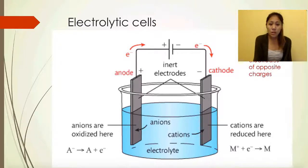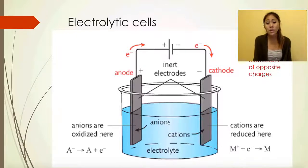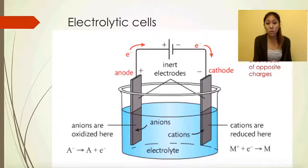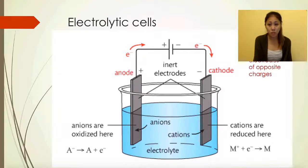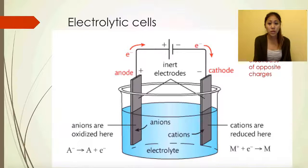At the anode, oxidation still occurs, and at the cathode, reduction still occurs — that doesn't change. Electrons always flow from anode to cathode in both cell types. What does change is the polarity of the electrodes: the anode is negative in a voltaic cell but positive in an electrolytic cell, and the cathode is positive in voltaic but negative in electrolytic.